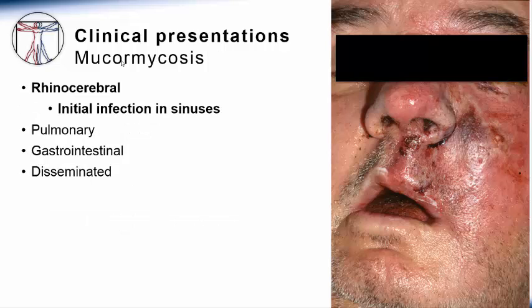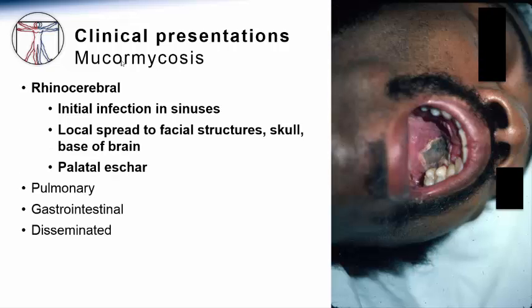Since the mucorales are present in the environment, the most common sites of clinical presentation of mucormycosis are those sites in contact with the outside world. Rhinocerebral mucormycosis involves the nasal passages, sinuses, and potentially progresses to greater involvement of the head and neck, as we saw in the first patient case. Another patient also developed rhinocerebral mucormycosis with a very late manifestation, a palatal eschar — a necrotic region in the hard palate. Although this is very characteristic of rhinocerebral mucormycosis, it is a late finding and should not be waited for in order to make the diagnosis.